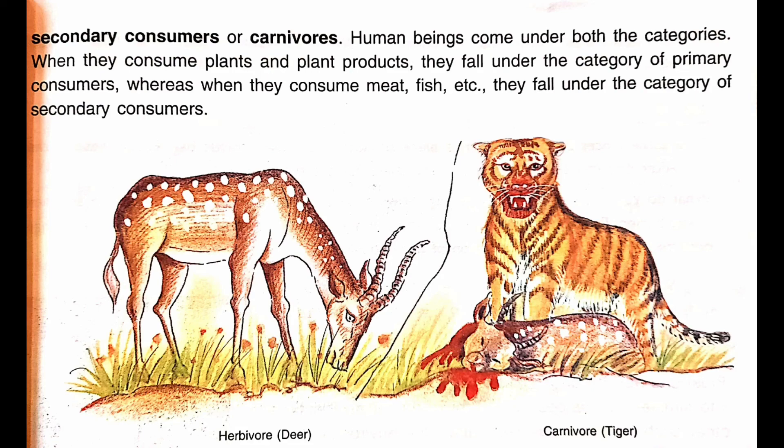Ab hum ek baar recapitulate kar lete hain — aaj humne kya kya seekha. Starting mein humne kheer ki recipe seekhi kyunki humay raw materials ka concept samajhna tha — jaise wahan ingredients the, plants ko bhi raw materials chahiye food preparation ke liye — to woh hote hain producers. Phir humne consumers ke baare mein seekha — jo plants pe depend karenge unhe primary consumers ya herbivores kahenge, jo animals pe depend karenge unhe carnivores ya secondary consumers kahenge, aur human beings jo omnivores hain dono category mein hain. Aapne page number 2 aur 3 ki reading karni hai aaj achhe se — written homework aaj nahi hai, aapne underline karne hain yeh words aur unke meanings jo aapki book mein diye hain. Have a nice day. Thank you for watching.